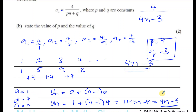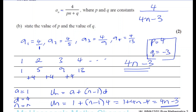So the value of p is 4, and the value of q is minus 3 — be very careful there. I nearly made a mistake writing it as positive 3, so always check before you continue. q is equal to −3, not +3.